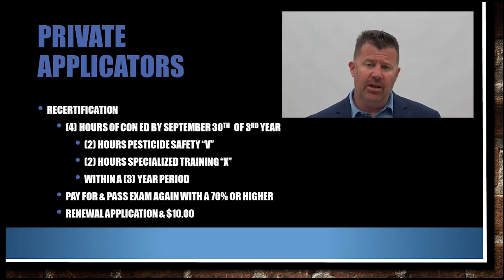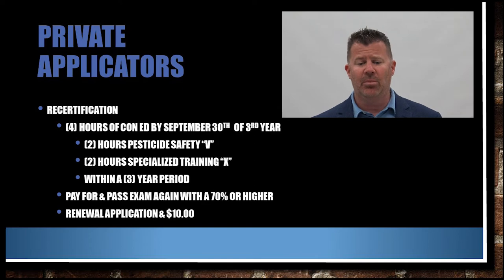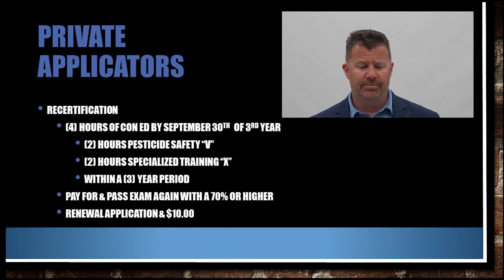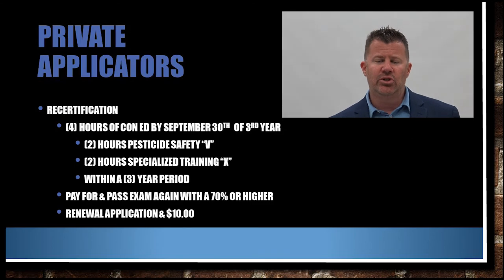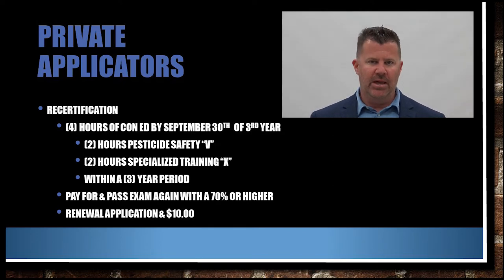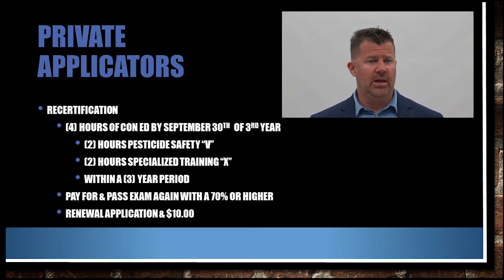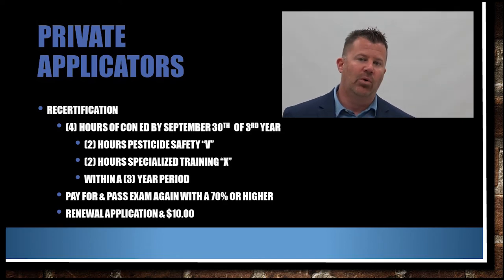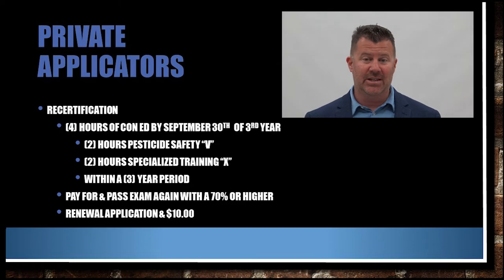For recertification, private applicators need to get four hours within a three-year period, completed by September 30th of the third year. You need at least two hours in safety (Category V) and two hours in your specialized training. Once you get licensed, you'll receive emails and letters about pesticide training events — for example, four hours of training where two hours are in safety and two hours are in Christmas tree farming or strawberry farming. Personally, I think four hours in three years is not enough; I think it should probably be four hours per year.